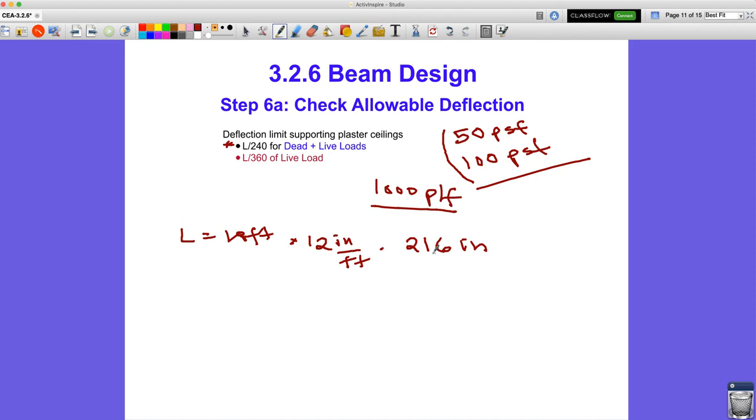So it's 216 inches, and we divide that by 240, and we get a deflection limit for the combined dead and live loads of 0.90 inches.